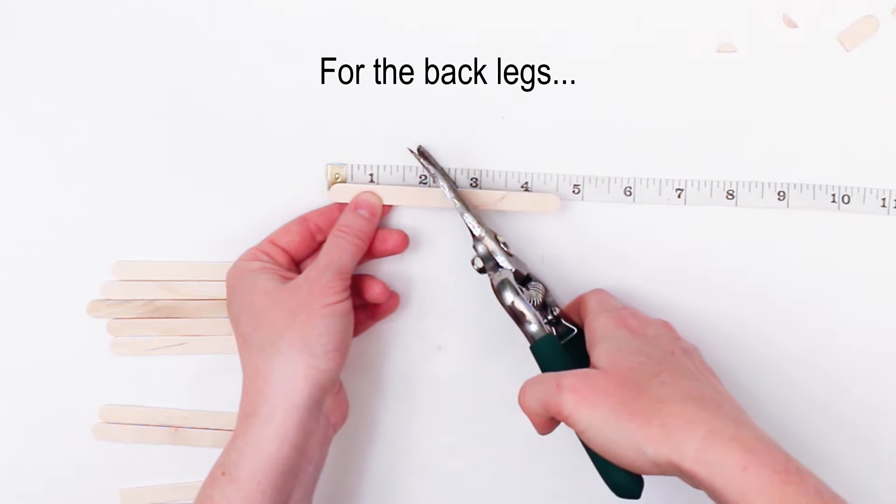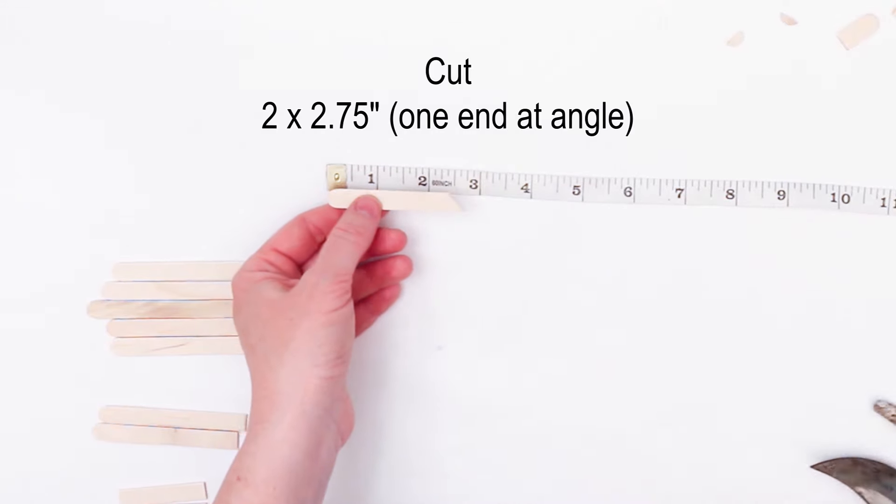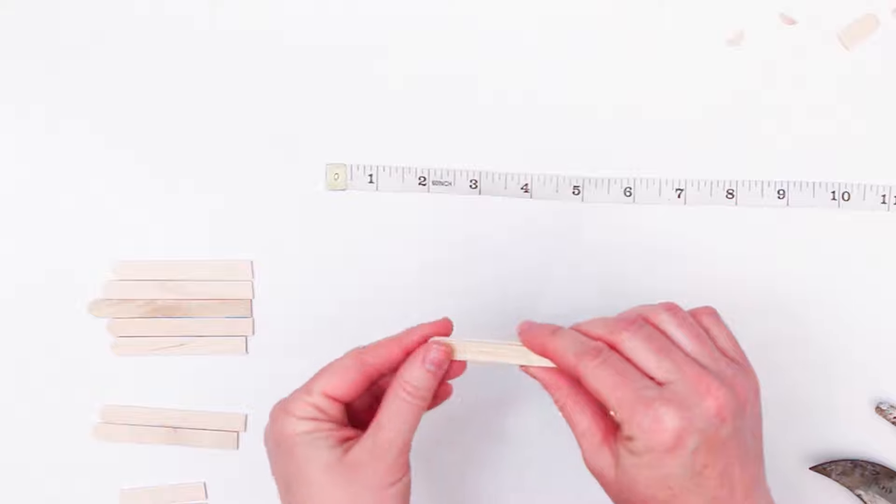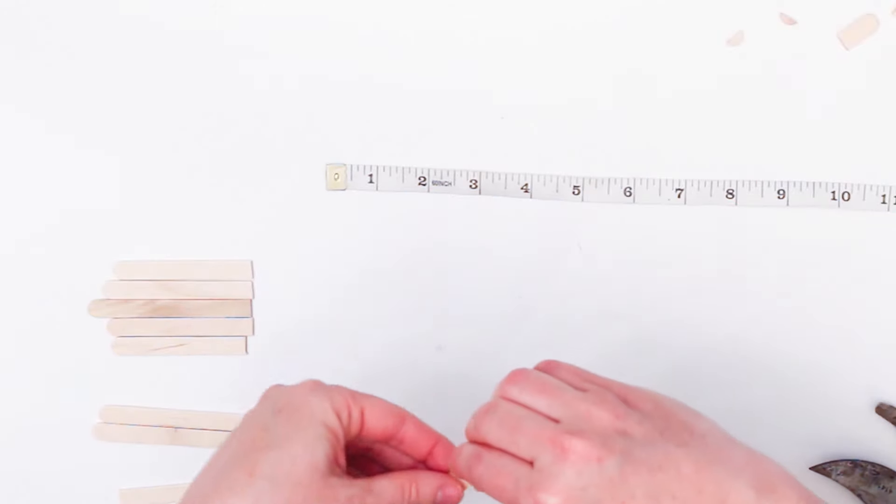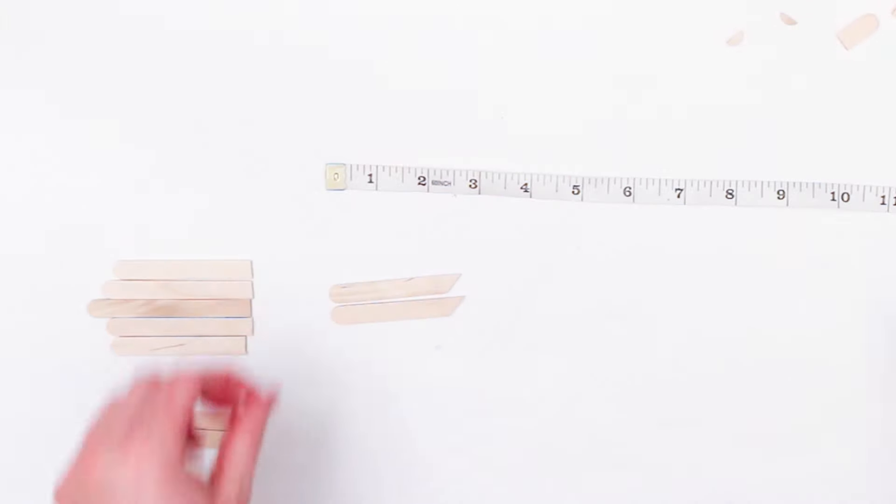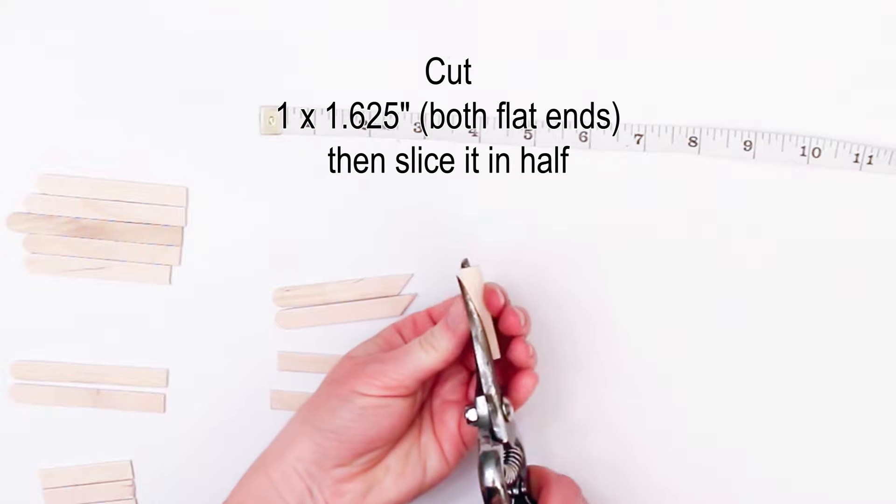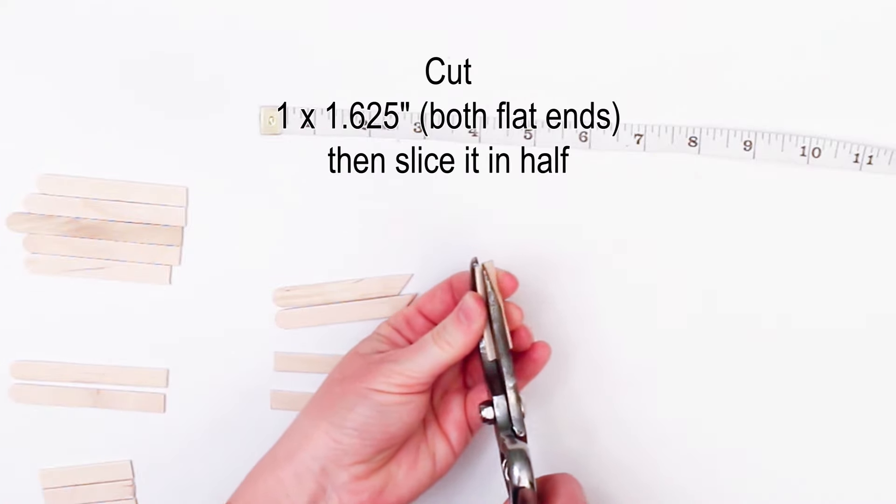For the chair's back legs which also is the base of the chair seat we'll cut two popsicle sticks two and three quarter inches each leaving one end rounded and cutting the other end at an angle. For the front legs cut one small piece that has both flat ends and then slice it in half.